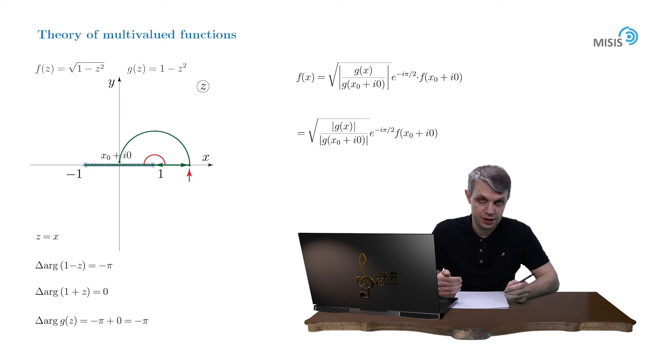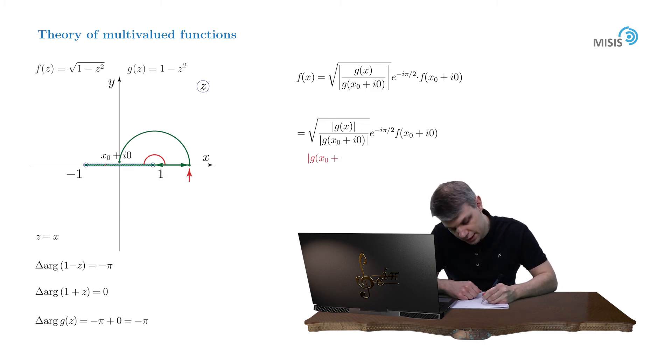And now let's recall that our g function is positive when x belongs to the segment from negative 1 to 1. So g of x0 plus i0 under modulus sign is positive and the modulus sign can be safely removed.